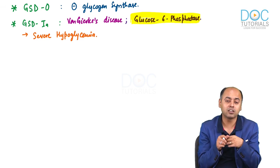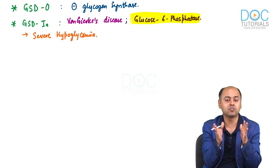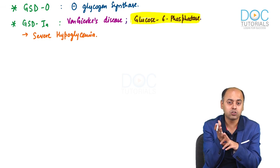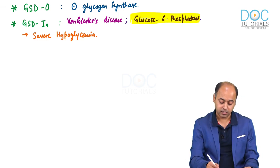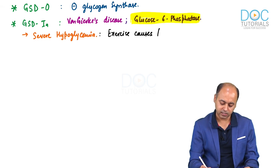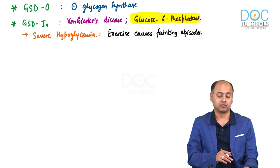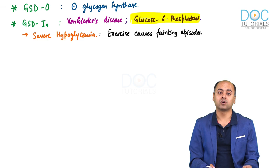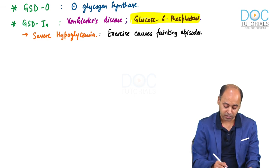When glucose-6-phosphatase is absent, both systems are disrupted. The blood glucose level will fall drastically when moving from the fed state to the fasting state, because neither glycogenolysis nor gluconeogenesis is providing blood glucose. This drastic fall causes severe hypoglycemia. In cases of severe hypoglycemia, exercise or physical activity will result in fainting. Very commonly, these patients are brought from the playing field with an episode of fainting.